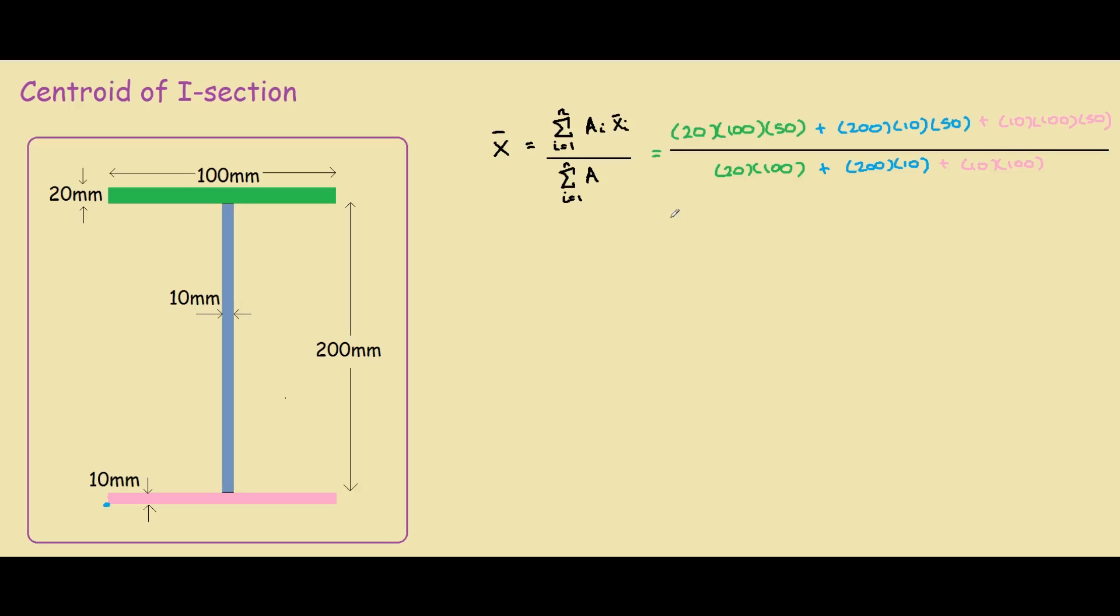If you put this into your calculator you should get 250,000 divided by 5000, and this would be 50mm from the reference point, which was our reference point right here.